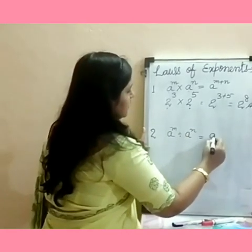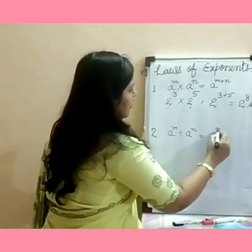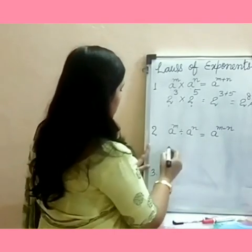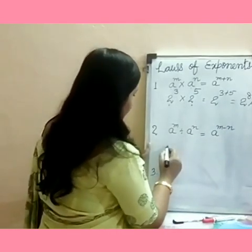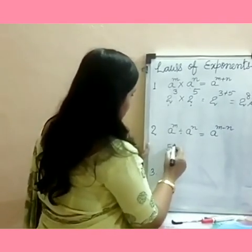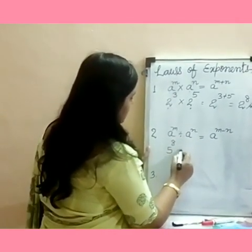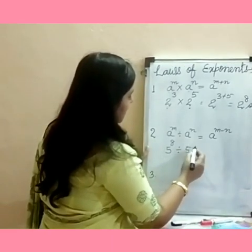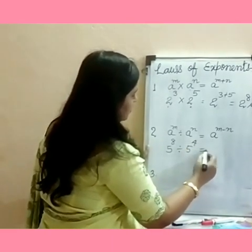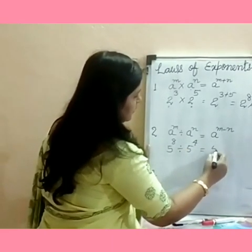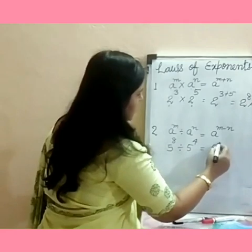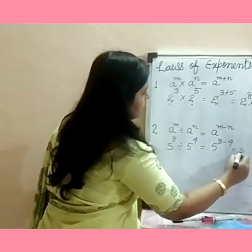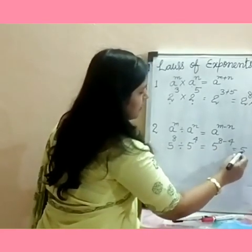For the division rule, the exponents will be subtracted. For example, 5 raised to the power 8 divided by 5 raised to the power 4 gives 5 raised to the power 8 minus 4, which equals 5 raised to the power 4.